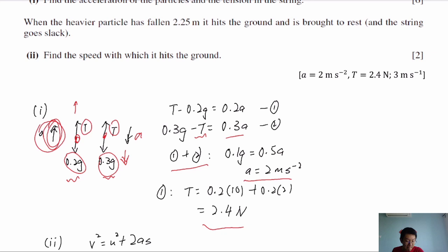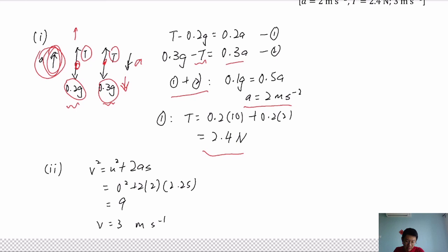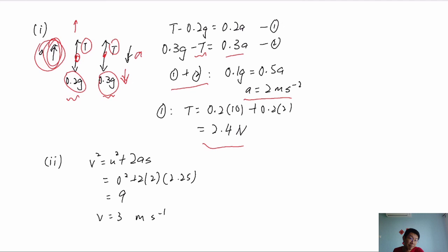For the second part, when the heavier particle has fallen 2.25 m it hits the ground and comes to rest. We find the speed at which it hits the ground — the velocity after traveling 2.25 m with initial velocity U = 0 (released from rest). Using V² = U² + 2AS, with A from before and S = 2.25 m, we get V = 3 m/s.